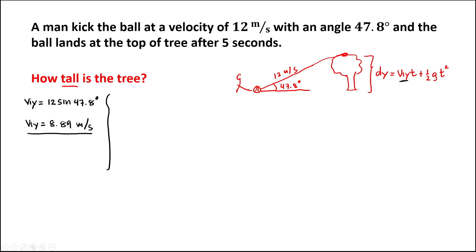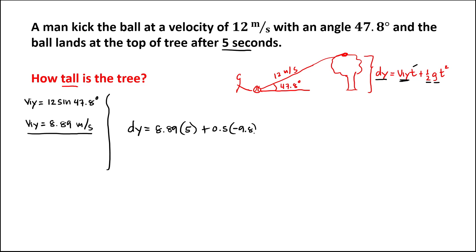Since we have the initial vertical velocity, we can now solve for the vertical distance — the height of the tree. So dy equals the initial velocity for y, 8.89, times the time of 5 seconds, plus 0.5 times gravity, which is negative 9.8, times the time squared — so 5 squared.